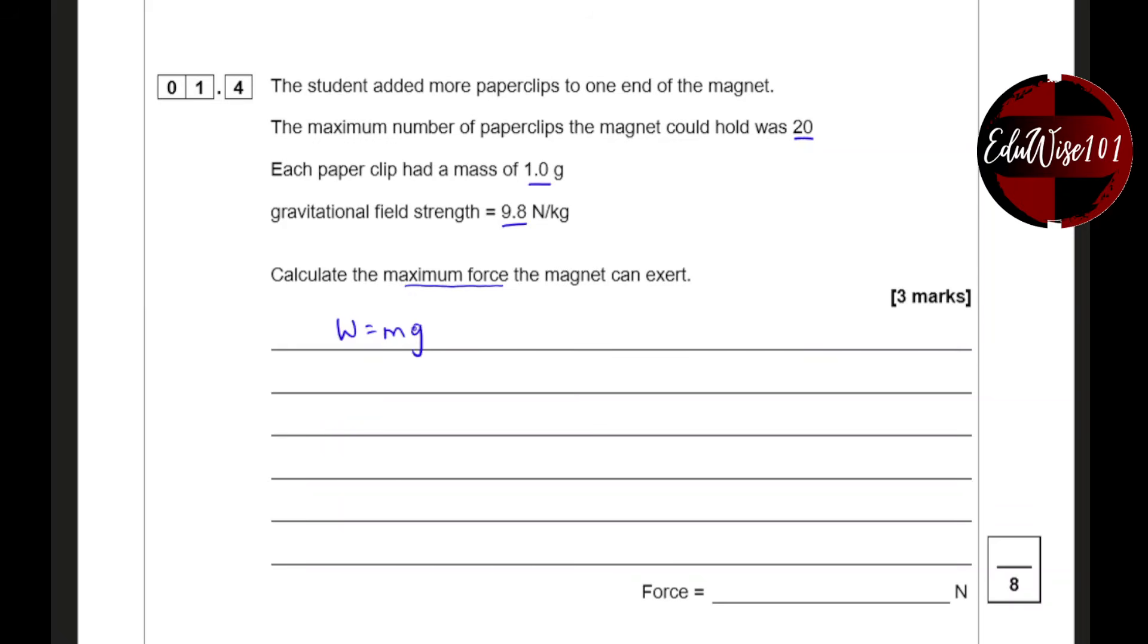Now the total mass is the mass of 20 paper clips. So 20 paper clips times 1 gram is 20 grams. Now if I convert that to kilograms, because when I'm using this in the equation, the mass has to be in kilograms. So I have to divide that by a thousand.